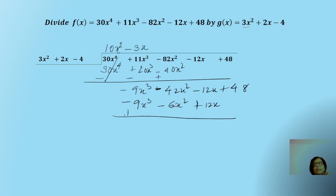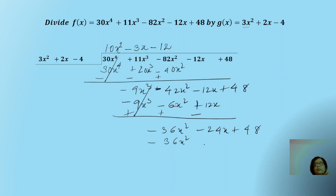Multiplying minus 3x by the divisor gives the next terms: minus 6x² and plus 12x. When we subtract, this term cancels, leaving minus 36x², minus 24x, and plus 48. The next quotient term addresses minus 36x²: with a minus sign and coefficient 12, since 3 × 12 = 36, we get minus 12. Multiplying: minus 36x², then minus 12 × 2 = minus 24x, and minus 12 × (minus 4) = plus 48. Subtracting, all terms reduce to zero and we get remainder zero.